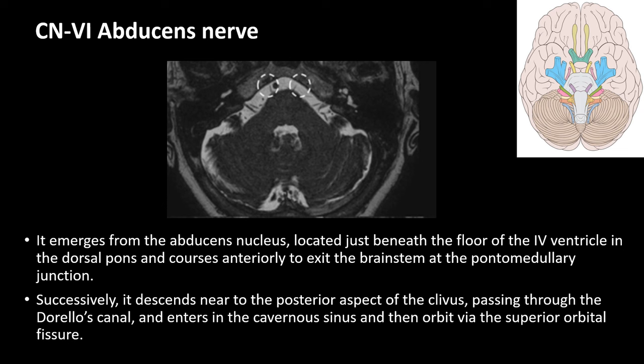The sixth cranial nerve, or the abducens nerve, emerges from the abducens nucleus which is located just beneath the floor of the fourth ventricle in the dorsal pons, and courses anteriorly to exit the brain stem at the pontomedullary junction. It then descends near the posterior aspect of the clivus, passing through Dorello's canal, and enters the cavernous sinus and then the orbit via the superior orbital fissure.